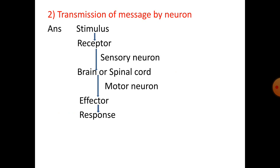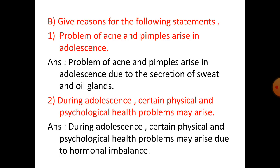Number two: transmission of message by neuron. It starts from stimulus, receptor, by sensory neuron, brain or spinal cord, by motor neuron, effector, and response.